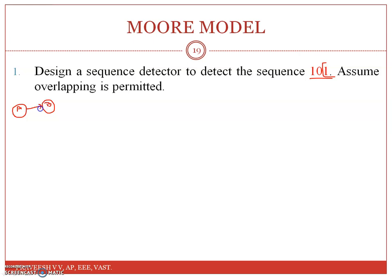For a 0 input, the output will be 0. We represent the notation as x-bar slash y, where x is the input and y is the output. This slash represents state transition.